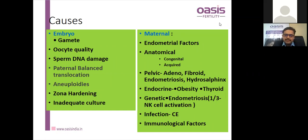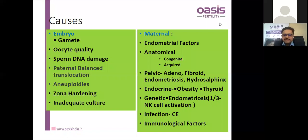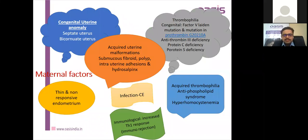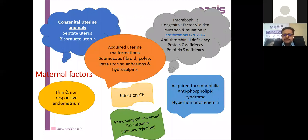Endocrine causes include thyroid and diabetes, and obesity is now included as an endocrine entity. In genetic causes, genes responsible for endometriosis impair endometrial receptivity, and one third are associated with NK cell activation. Chronic endometritis and immunological factors are also causes. Thrombophilias — both congenital and acquired — are considered more a cause of recurrent pregnancy loss than RIF specifically, but can sometimes lead to RIF.